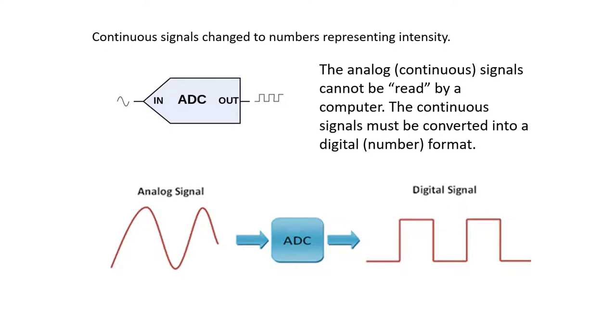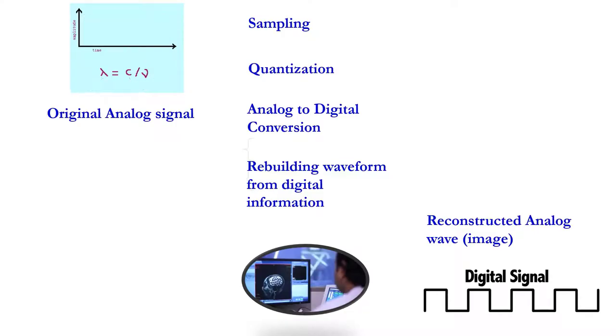The analog or continuous signals cannot be read by a computer. The continuous signals must be converted into a digital number or format. This is called analog to digital conversion. We reverse the process and have digital to analog conversion when we're going to take a look at an image on a monitor.